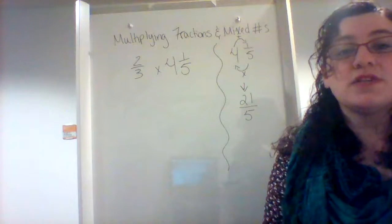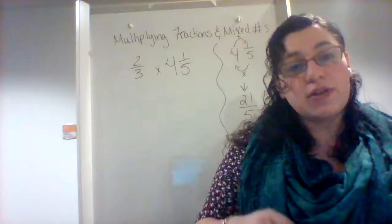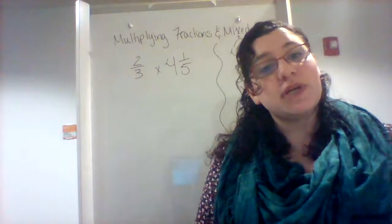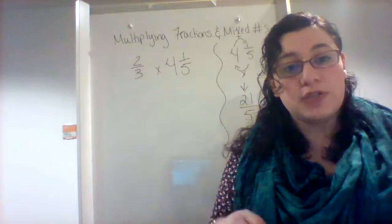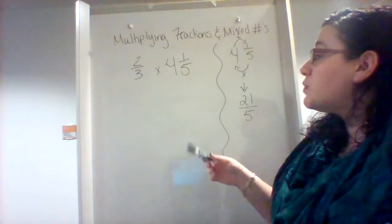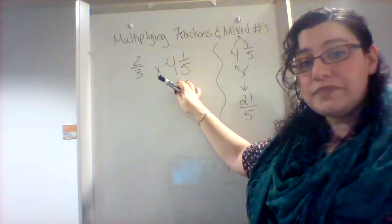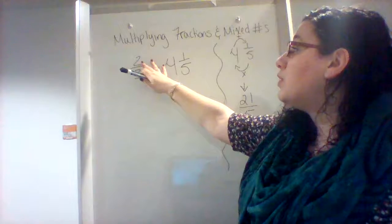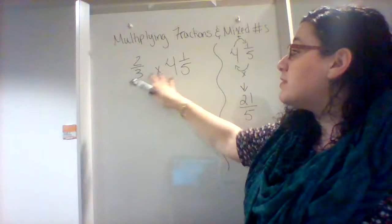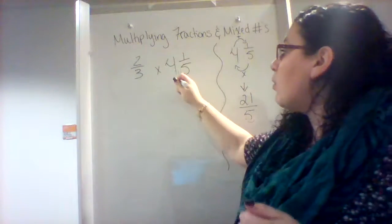In a previous lesson, we multiplied fractions by other fractions, and it was simply multiplying straight across, numerator times numerator, denominator times denominator. But now we are going to switch it up, and we have a fraction times a mixed number. Now we can't simply do numerator times numerator and denominator times denominator because we have a whole number.